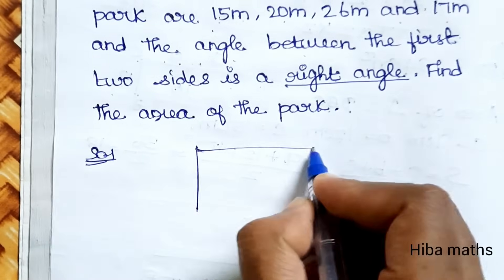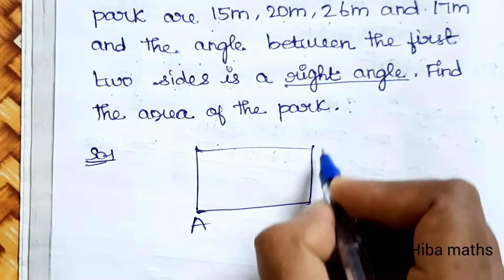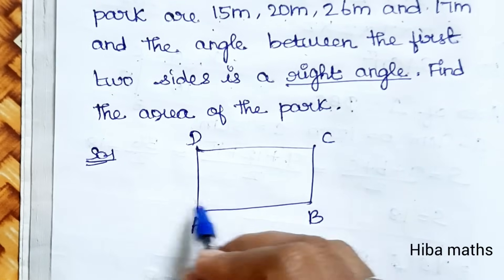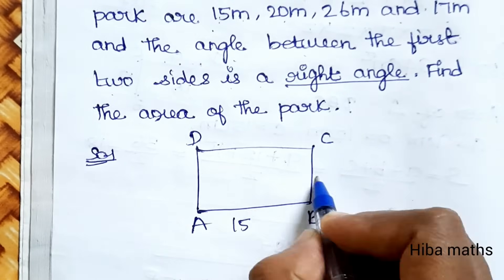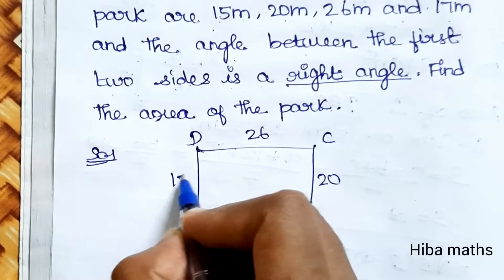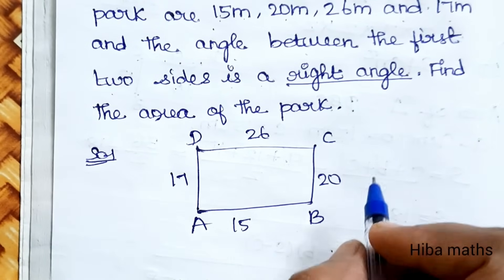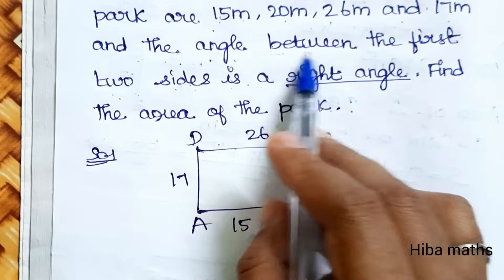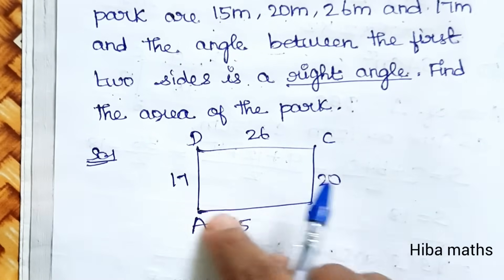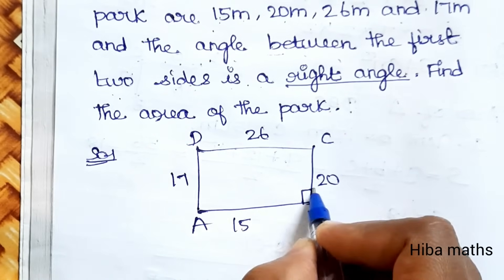Let's take a quadrilateral park and call it A, B, C, D. The sides are: AB = 15 meter, BC = 20 meter, CD = 26 meter, and DA = 17 meter. The angle between the first two sides is a right angle, so angle B is 90 degrees.